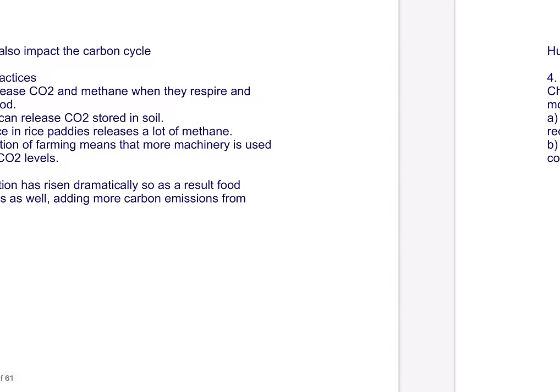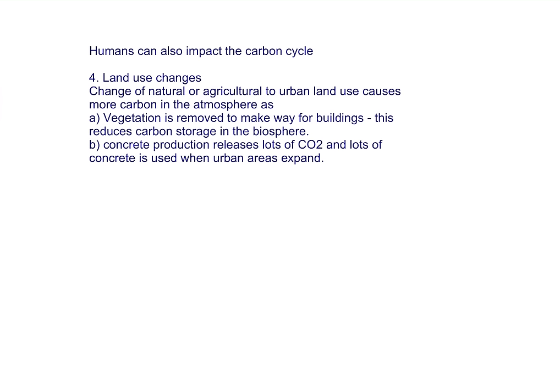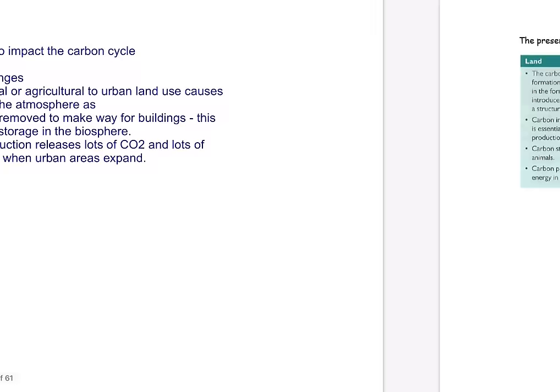Land use change is another factor — linking to contemporary urban environments knowledge. Changing natural or agricultural land to urban land creates huge challenges: vegetation is removed to make way for buildings, and concrete production releases a lot of CO₂. Urban sprawl is a huge process impacting on the carbon cycle.